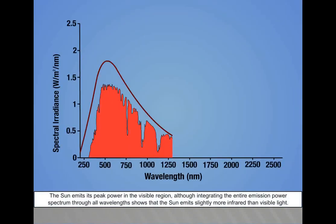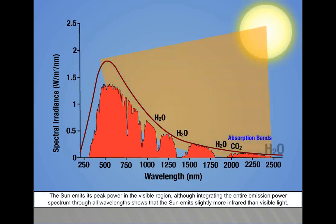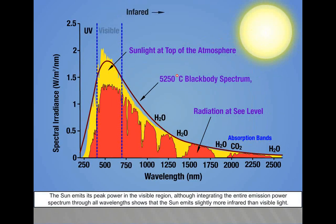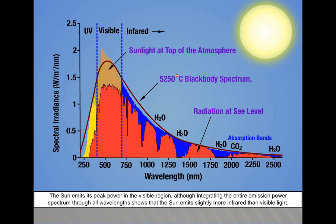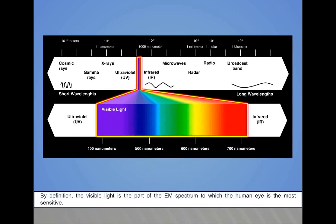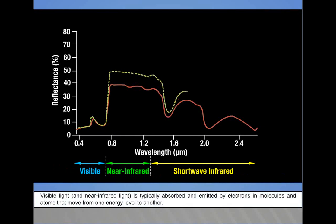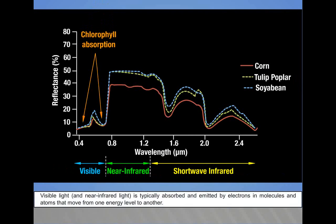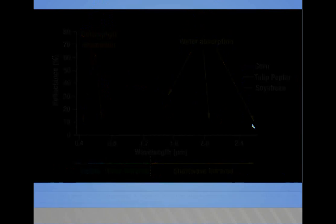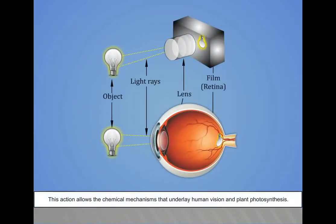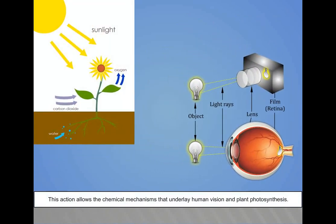The sun emits its peak power in the visible region, although integrating the entire emission power spectrum through all wavelengths shows that the sun emits slightly more infrared than visible light. By definition, visible light is a part of the EM spectrum to which the human eye is the most sensitive. Visible light and near-infrared light is typically absorbed and emitted by electrons in molecules and atoms that move from one energy level to another. This action allows the chemical mechanisms that underlie human vision and plant photosynthesis.